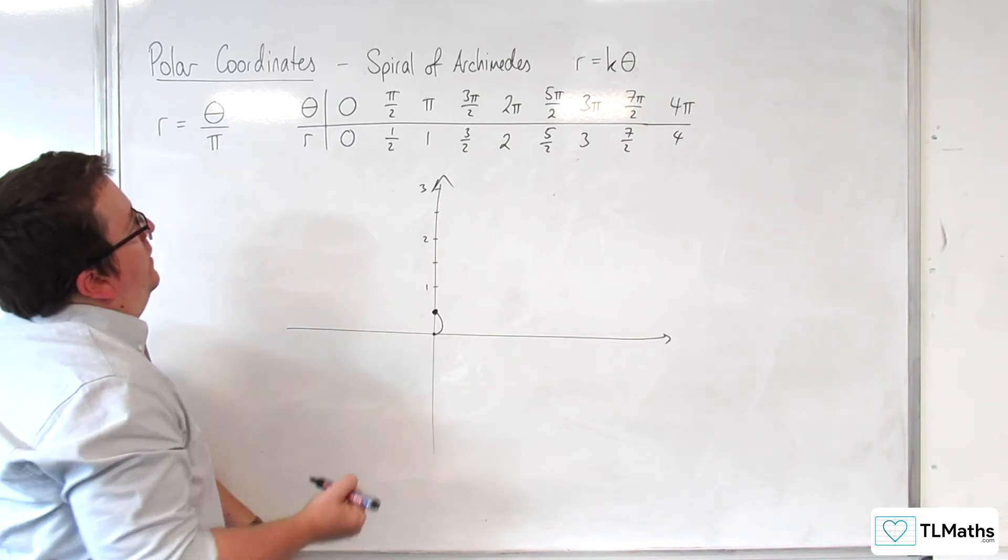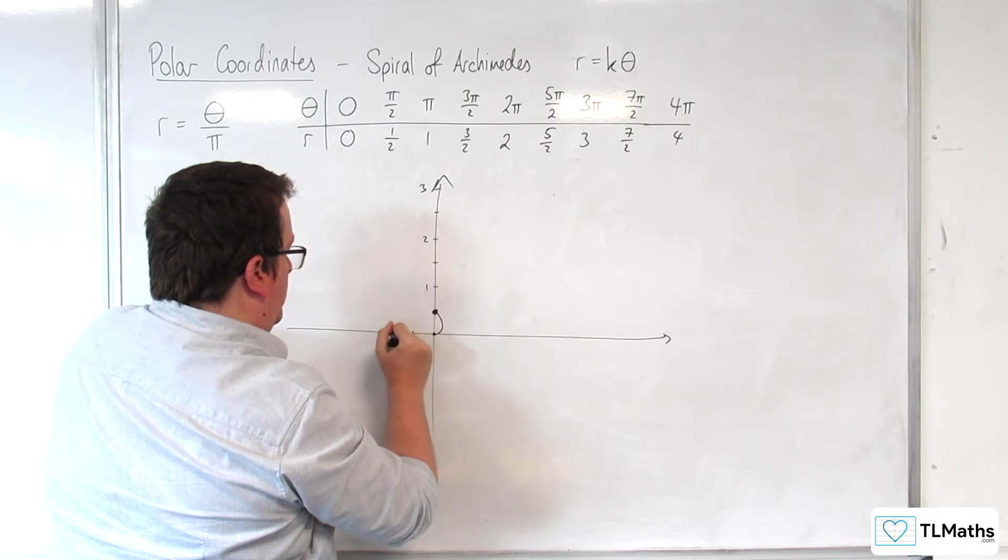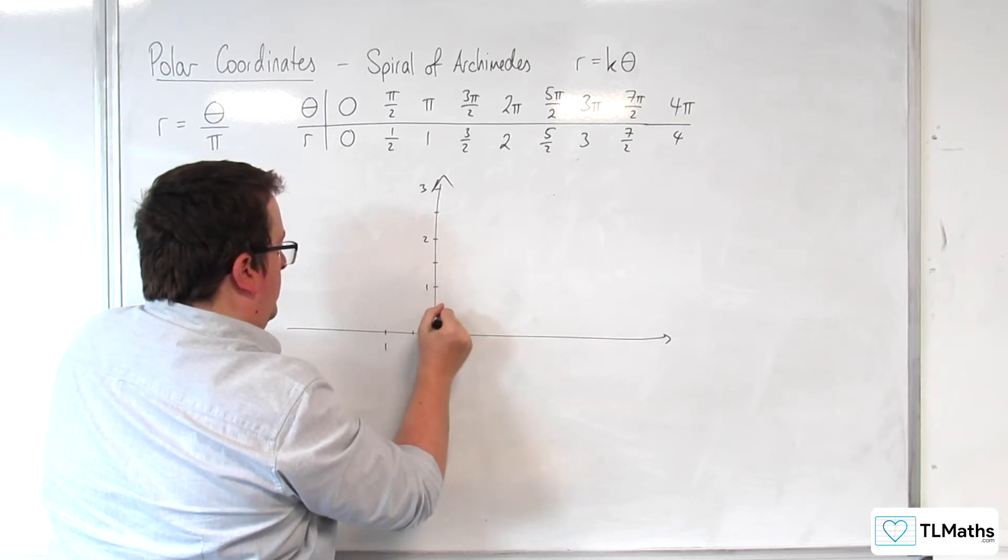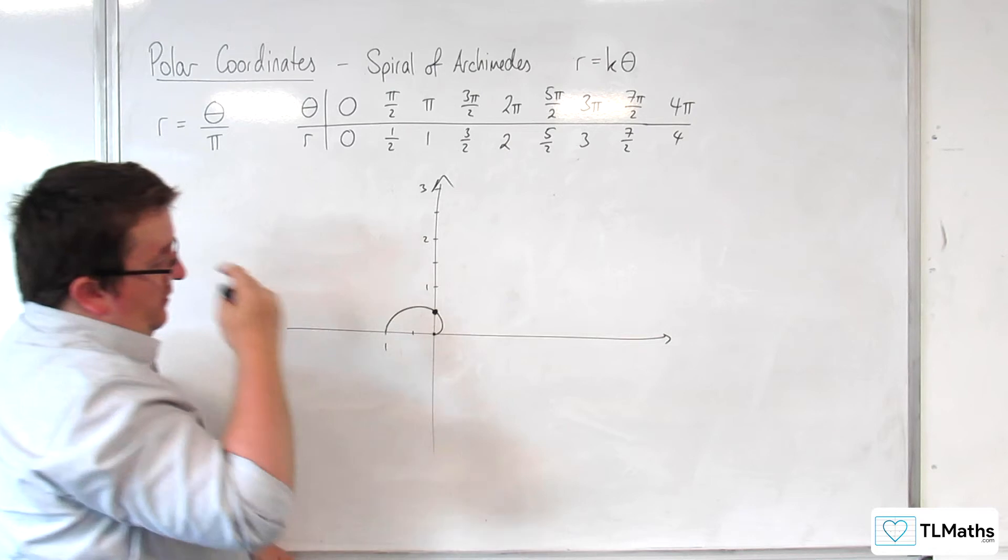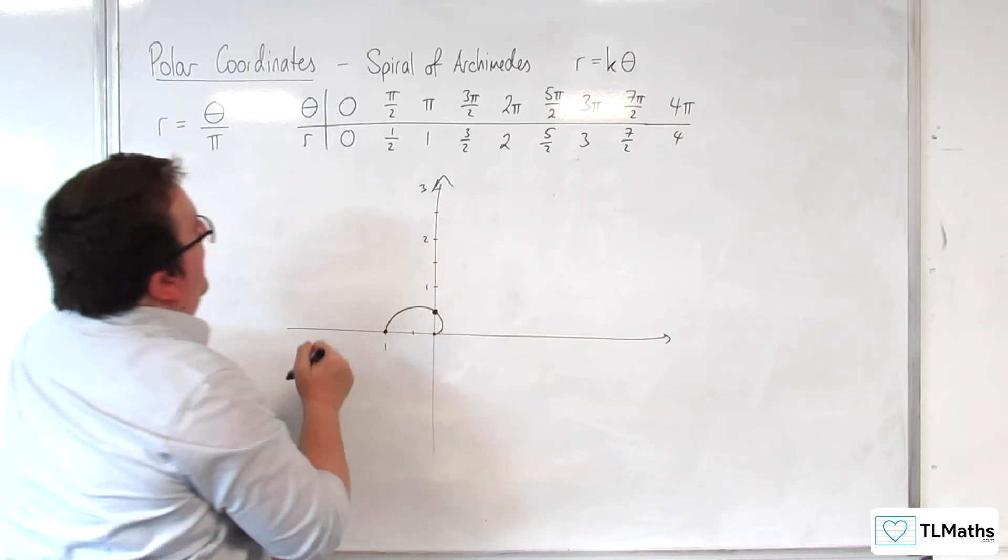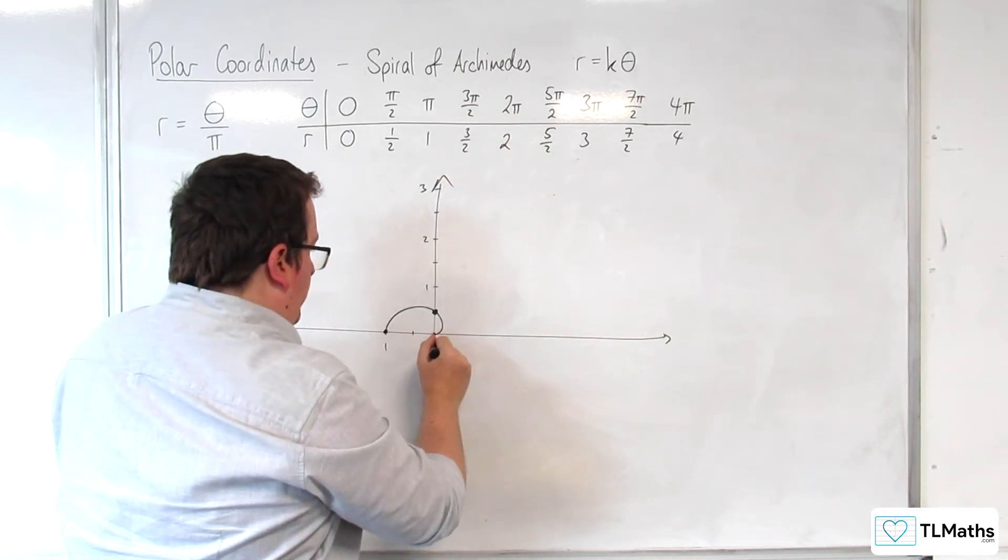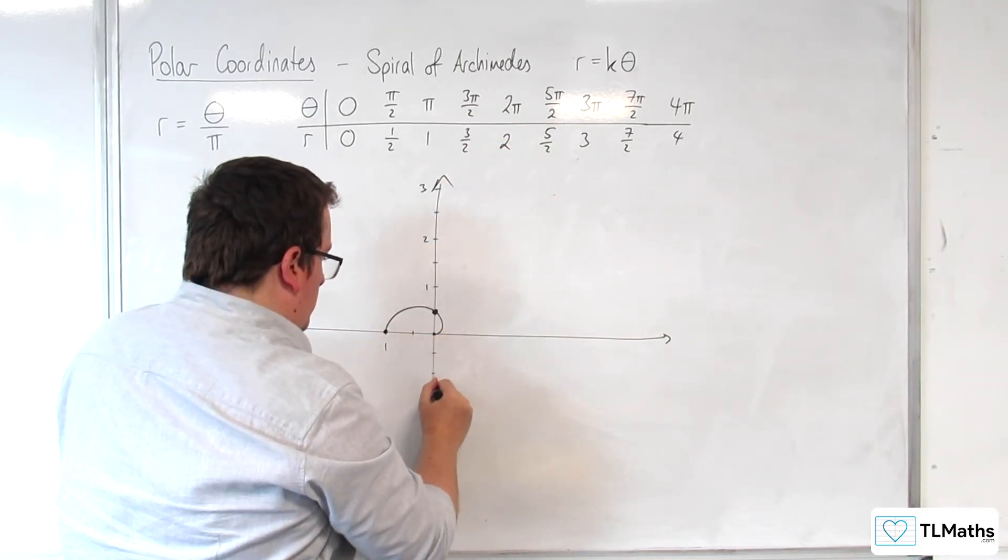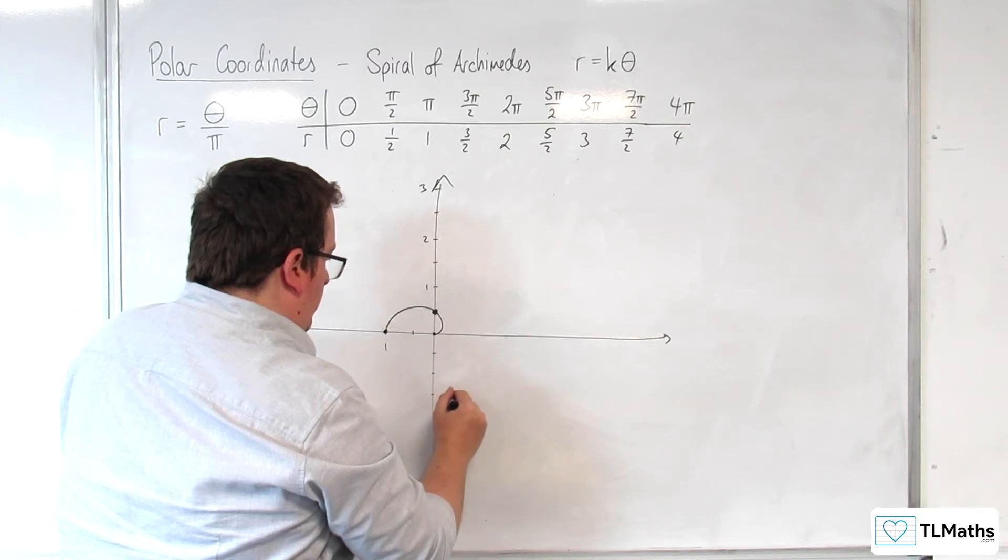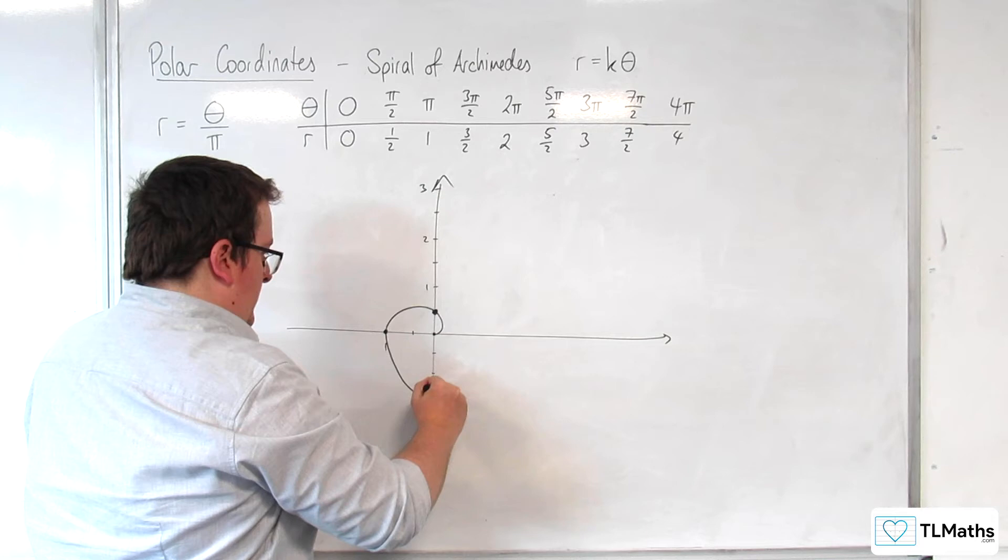Then when theta is at pi, we are at r is 1. So, half and then 1. So, the curves come around to that point there. And then when theta is 3 pi over 2, we get to 3 halves. So, 1, 2, 3. So, that's now at 3 halves. So, the curve comes around like this.